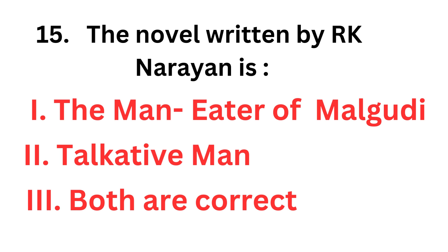Now the last question of today's class: the novels written by R.K. Narayan are — options are The Man Eater of Malgudi, Talkative Man, or both are correct. The correct answer is both are correct — both The Man Eater of Malgudi and The Talkative Man were written by R.K. Narayan.